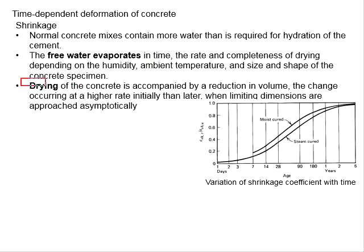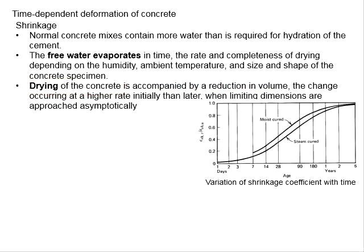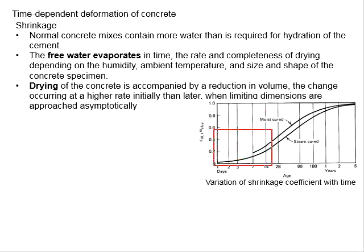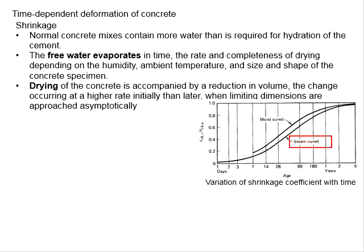The drying of concrete is accompanied by a reduction in volume. These reductions in volume constitute the shrinkage of the concrete, and the development of shrinkage is faster at the early stage and slower at the later stage. Depending on the method of curing, the moist curing method normally results in a higher degree of shrinkage, while steam curing results in slightly lower shrinkage.